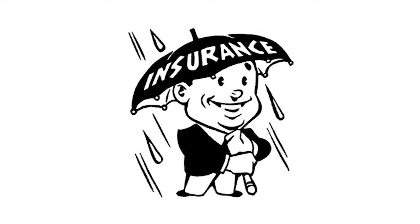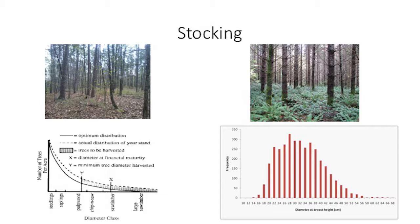I like to think of uneven age management as natural insurance from disturbance, and the reason I say that is because of the size class distribution in an uneven age stand. If we start on the bottom right and look at the diameter distributions of that chart, you're going to see the number of stems on the y-axis and the distribution or density of trees within each diameter class. From an even age stand, which is typically what we're managing in a pine plantation, you're going to get this bell-shaped curve where you get one peak and then two tails coming off of the sides.